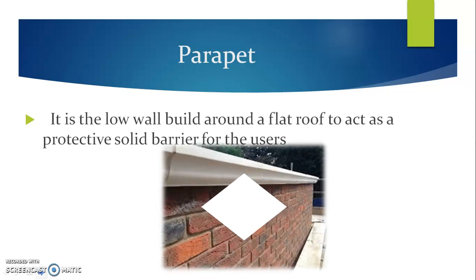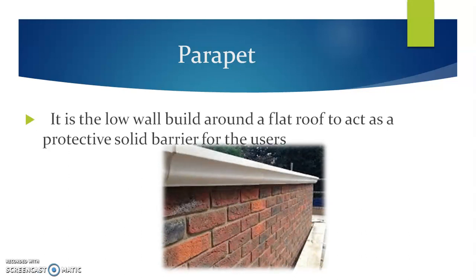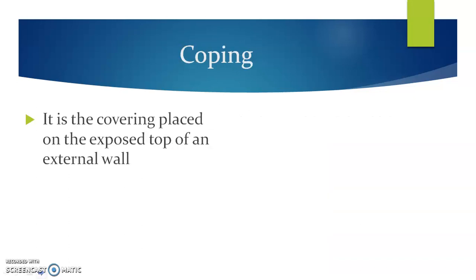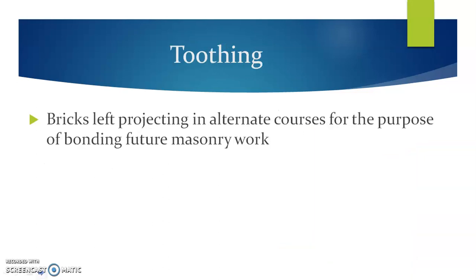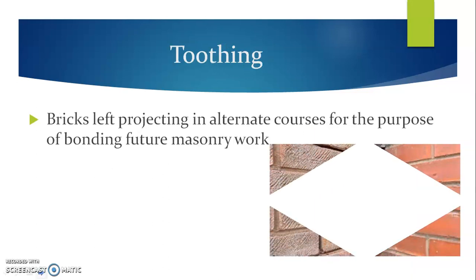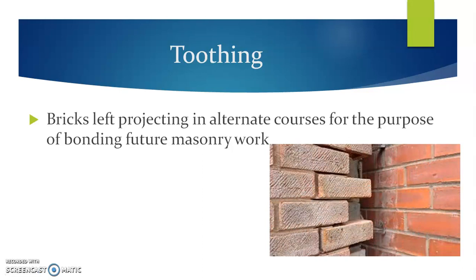Parapet. A parapet is a low wall built around a flat roof to act as a protective solid barrier for the user. Coping is a covering placed on the exposed top of an external wall. This is used to protect the wall as well as to improve upon the overall appearance of the structure. Toothing. The bricks left projecting in alternate courses for the purpose of bonding in future work masonry is called toothing. This figure indicates toothing, which is useful for connecting two different walls with each other.